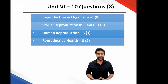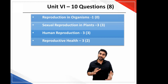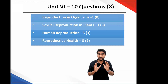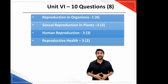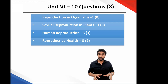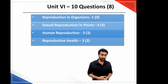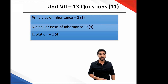We go on to the 12th standard NCERT textbook — the reproduction unit, which is unit six. There were 10 questions asked this year compared to 8 last year. Out of that, there was 1 question from reproduction in organisms, 3 from sexual reproduction in plants, and 3 from human reproduction — both on expected lines. Reproductive health had 3 questions this year, which according to me is a bit too much considering the small size of the chapter. So 10 questions total were asked from unit six.